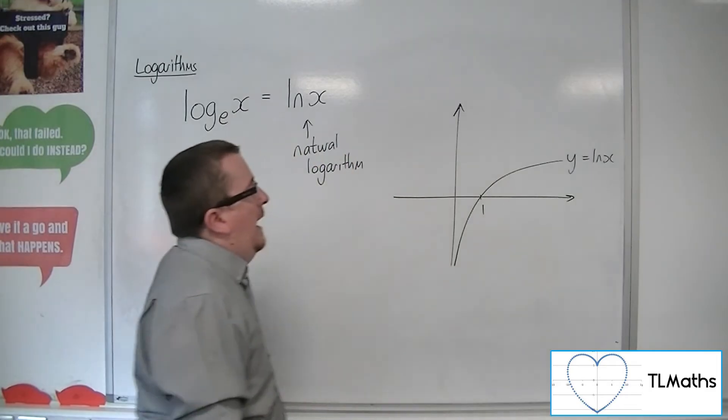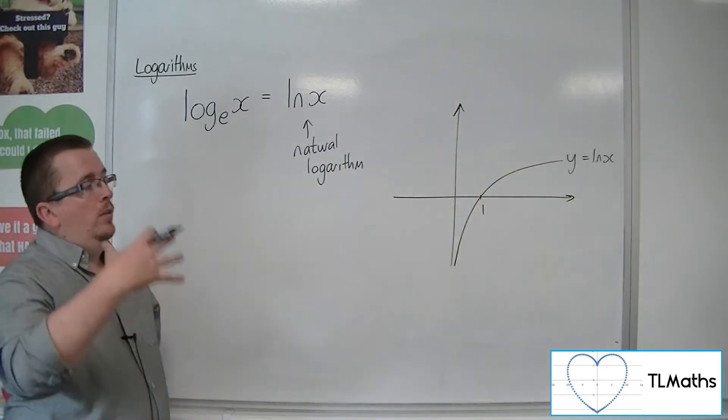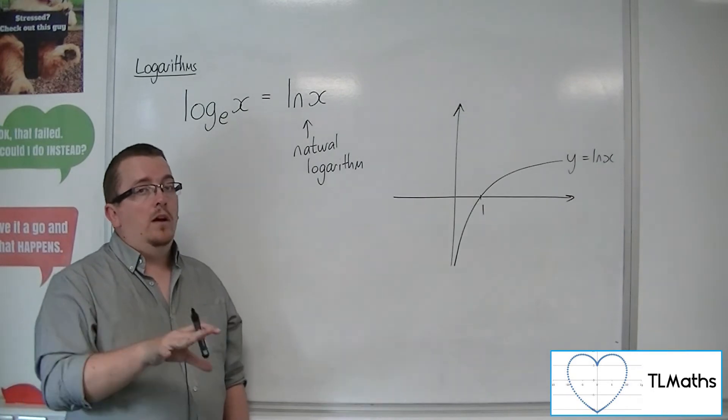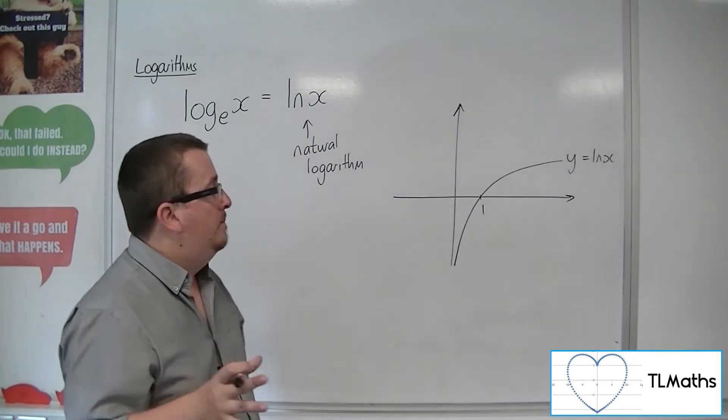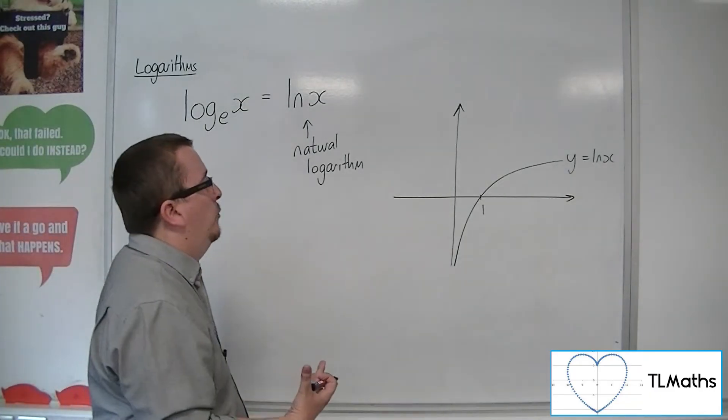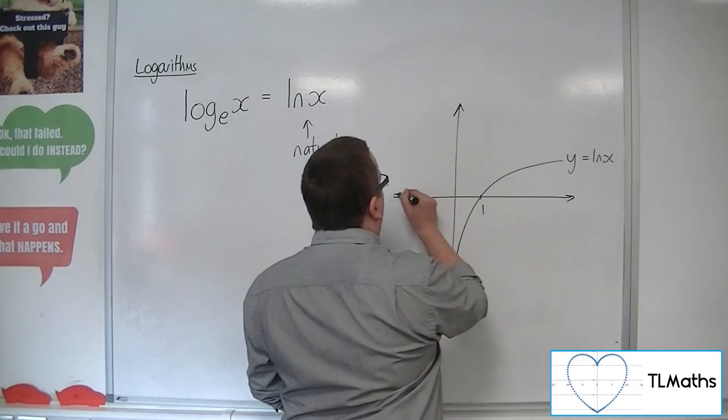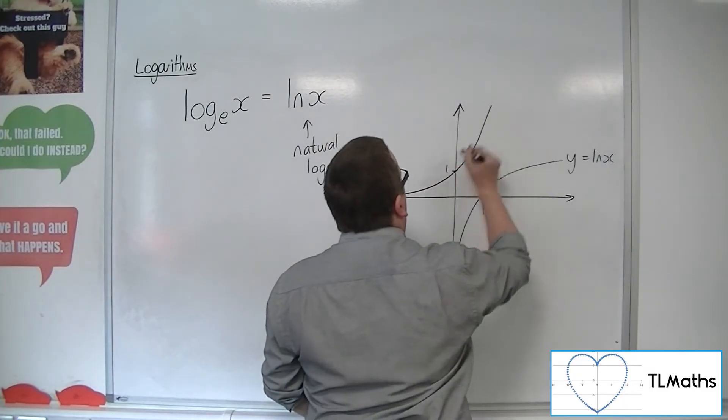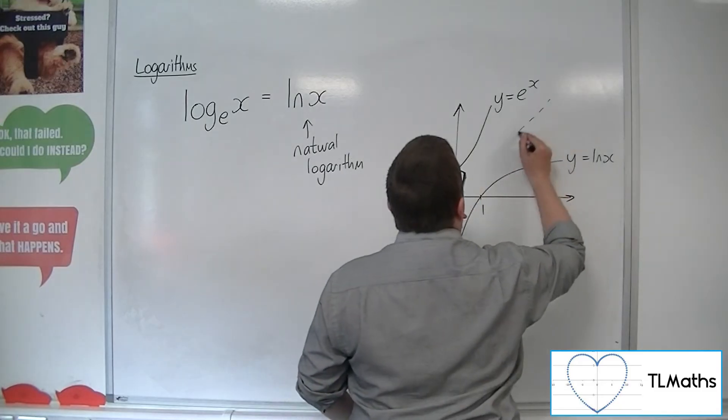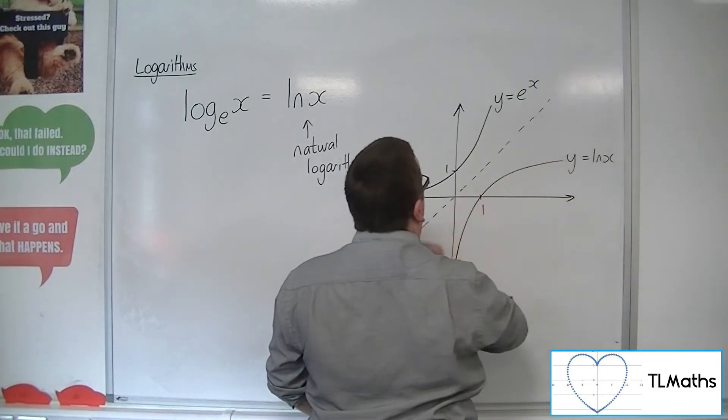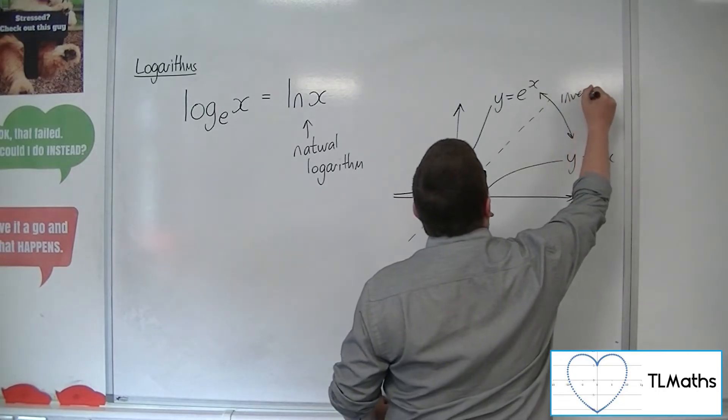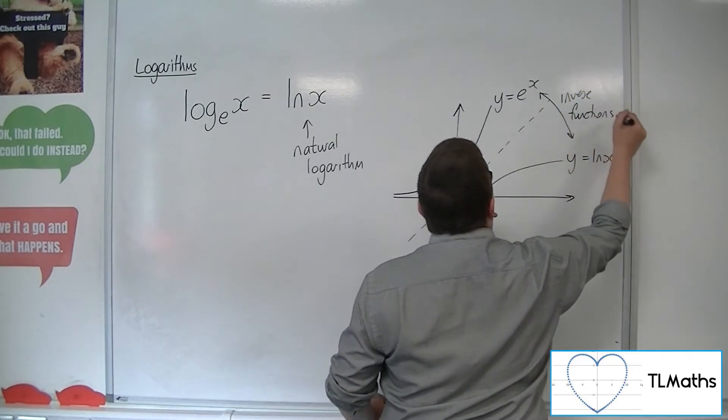And like 2 to the x and log base 2 of x were inverse functions of one another, e to the x and ln of x are also inverse functions of one another. So, here is y equals e to the x. So these two are inverse functions.